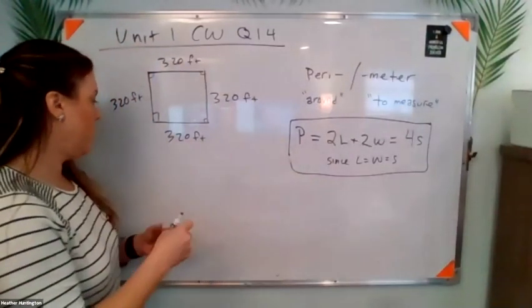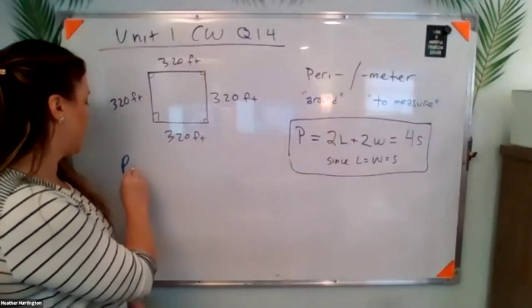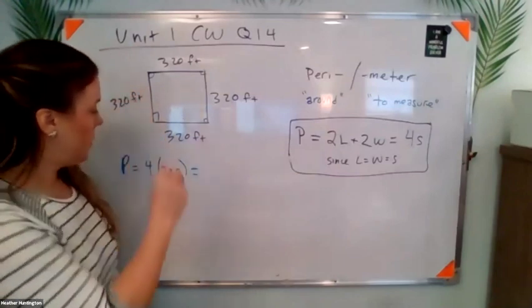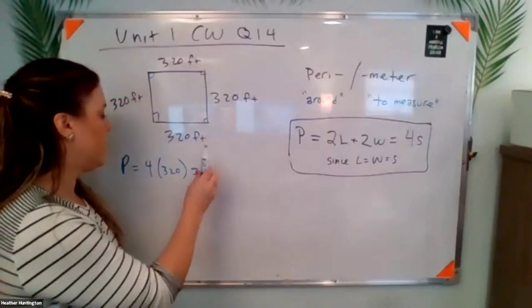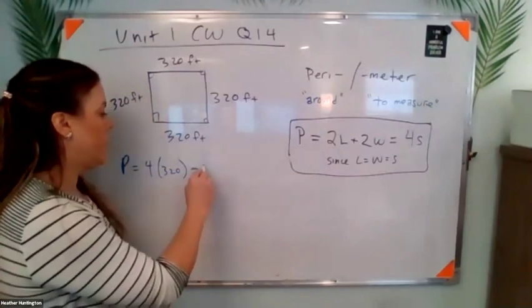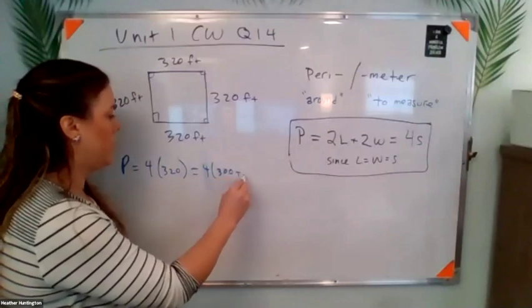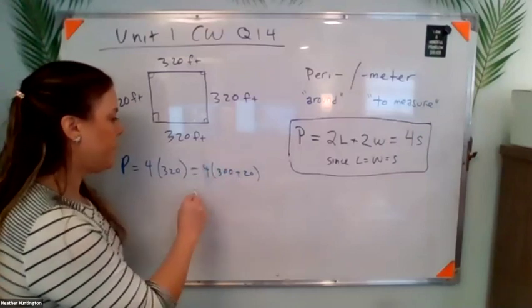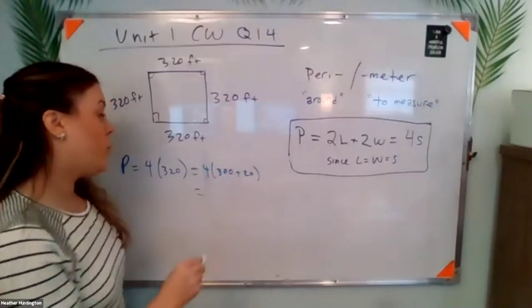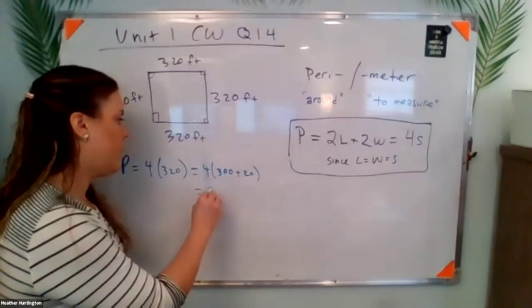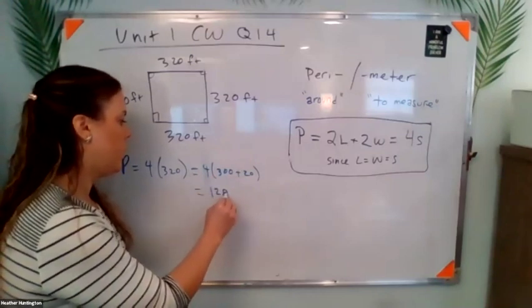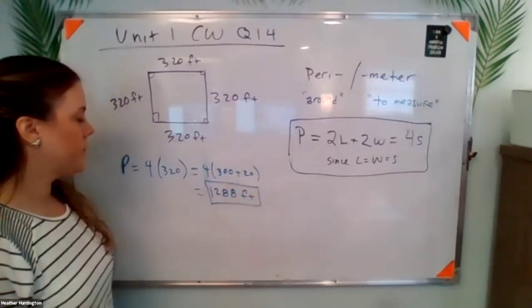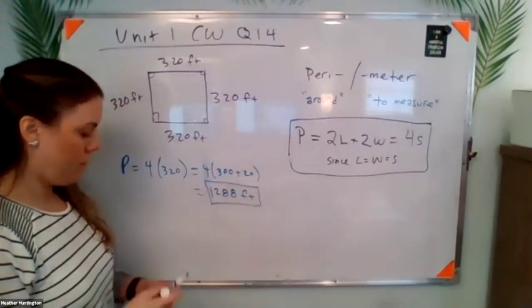Now, the perimeter will be four times 320. I always encourage you to not use your calculator. So this is how I would do it in my head. So that's 1200 plus 80, so that's 1280 feet. Does it seem reasonable? Yeah. Yes.